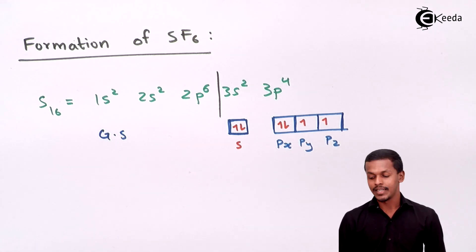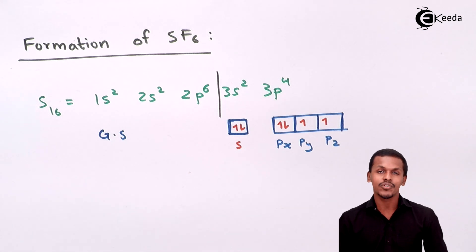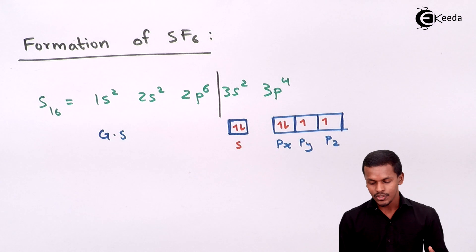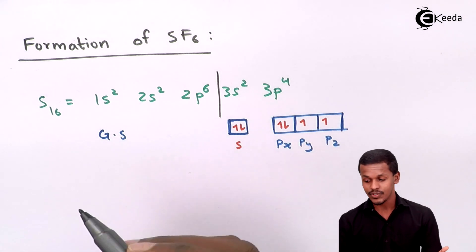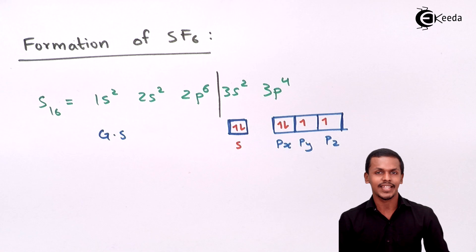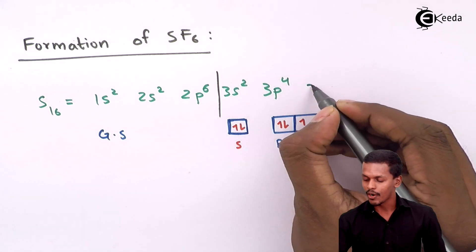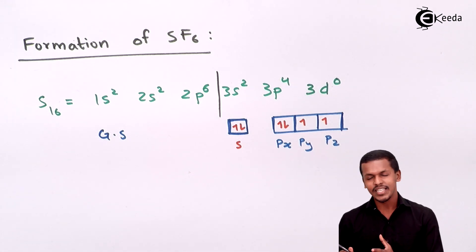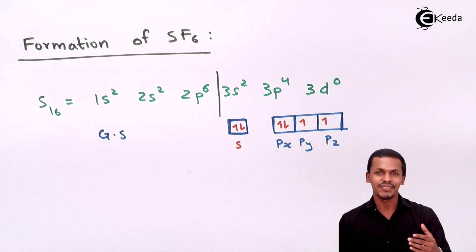We have to excite the electrons. To do this, sulfur needs empty orbitals available. We can write the electronic configuration to include 3d⁰, showing that there are vacant d orbitals to which electrons can be shifted.